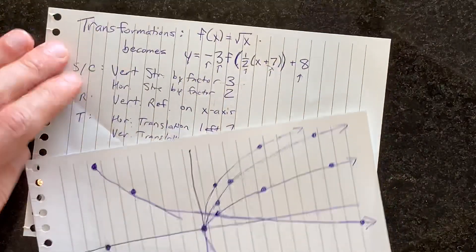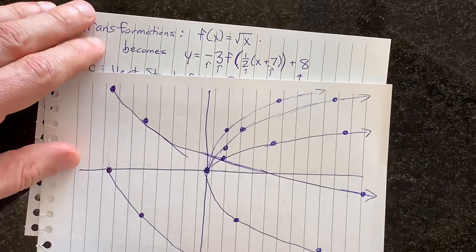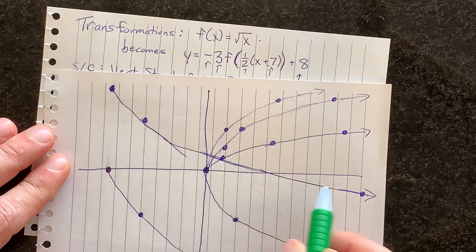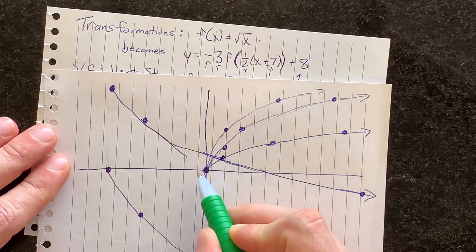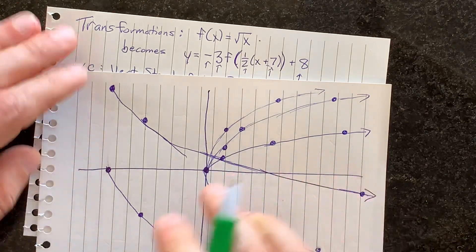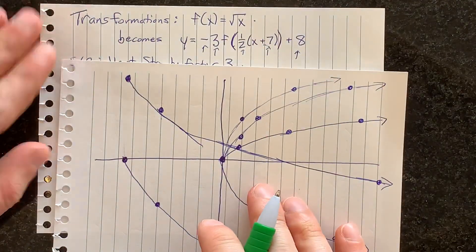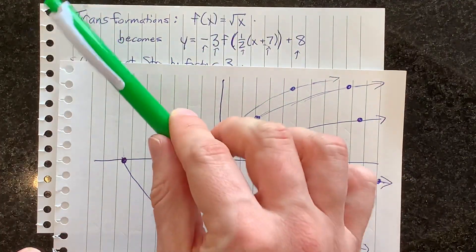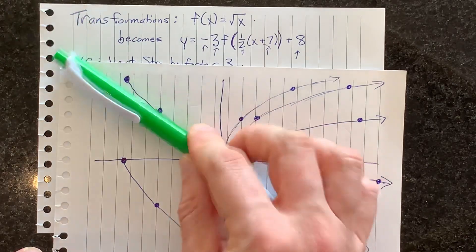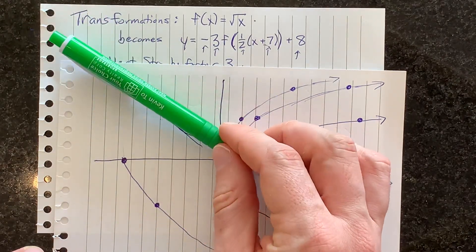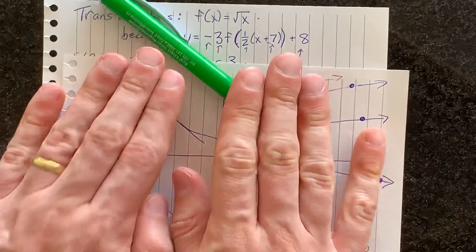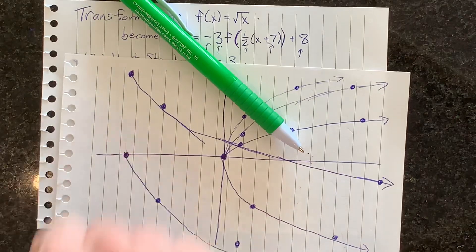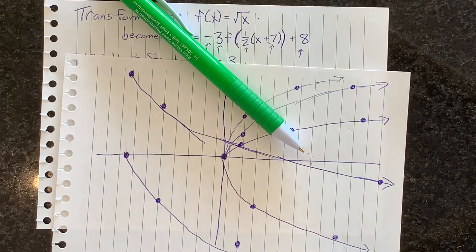This is the final transformed graph compared to the original. Not too bad — it only took eight minutes and 40 seconds, and I'm doing every step with care because I care about you. Best of luck.